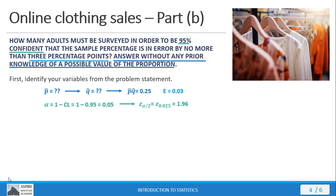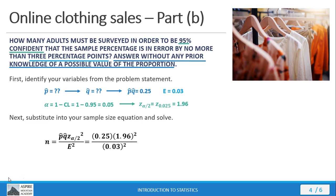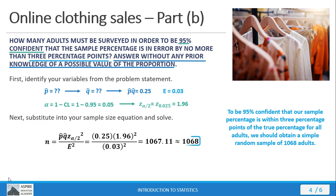So now we're going to substitute those values into our sample size equation. Here's our sample size equation. We substitute the values in, and out comes the final value of 1,068. Notice how much significantly higher this sample size is than what we saw previously, all because we didn't know what P-hat or Q-hat were. So it really does make a difference — if you can know what that proportion is, it helps you reduce that sample size.